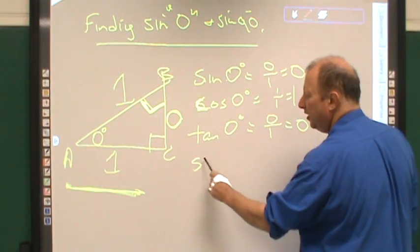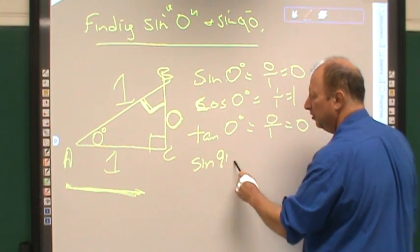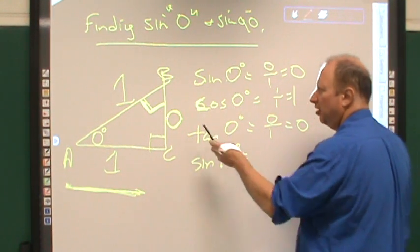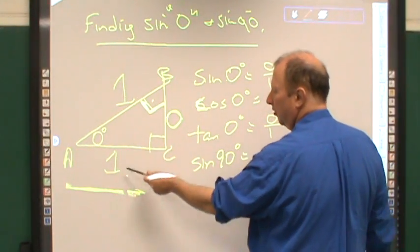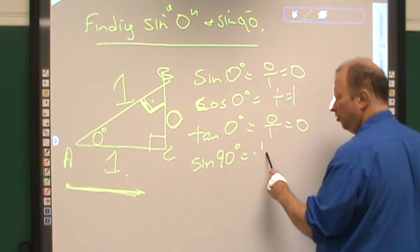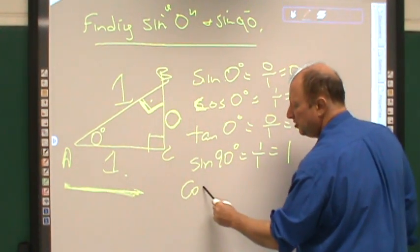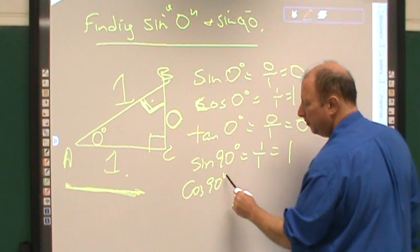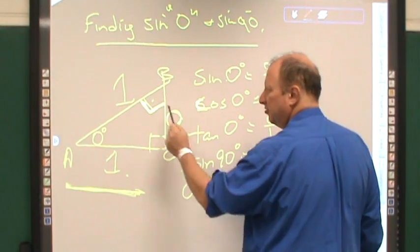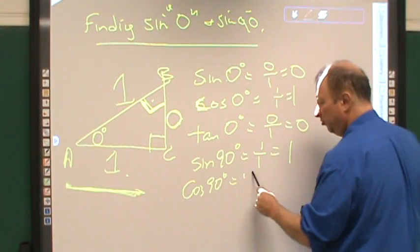Okay, let's look at sine of 90 degrees. Well, sine of 90 is opposite over hypotenuse, which is one over one, which is one. Cosine of 90 degrees is adjacent over hypotenuse, which is zero over one, which is zero.